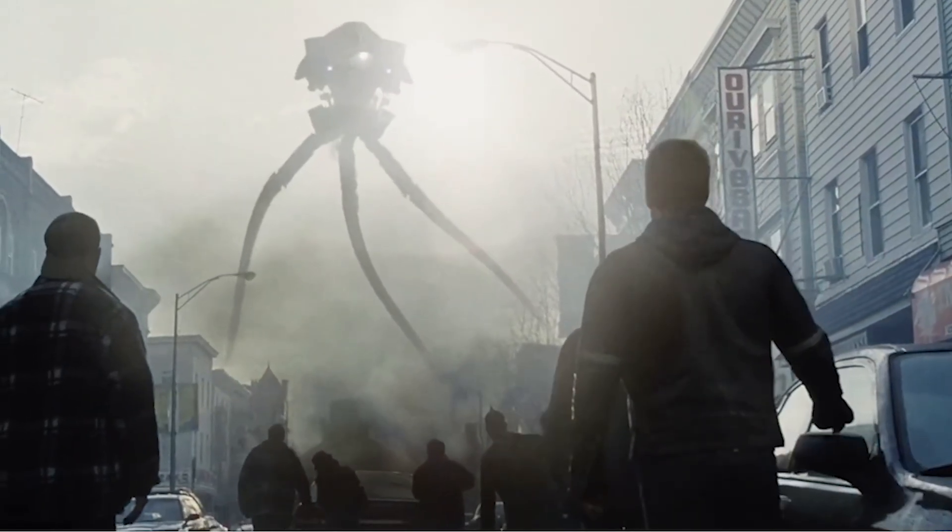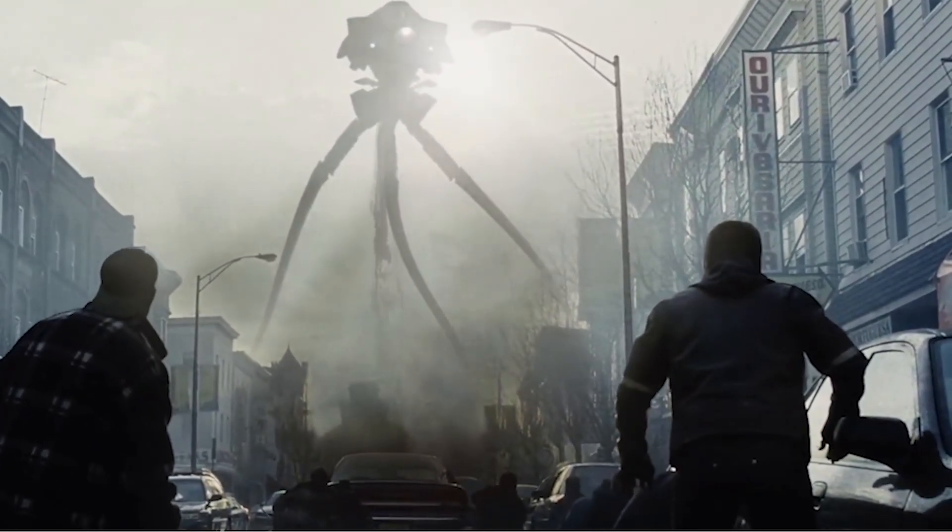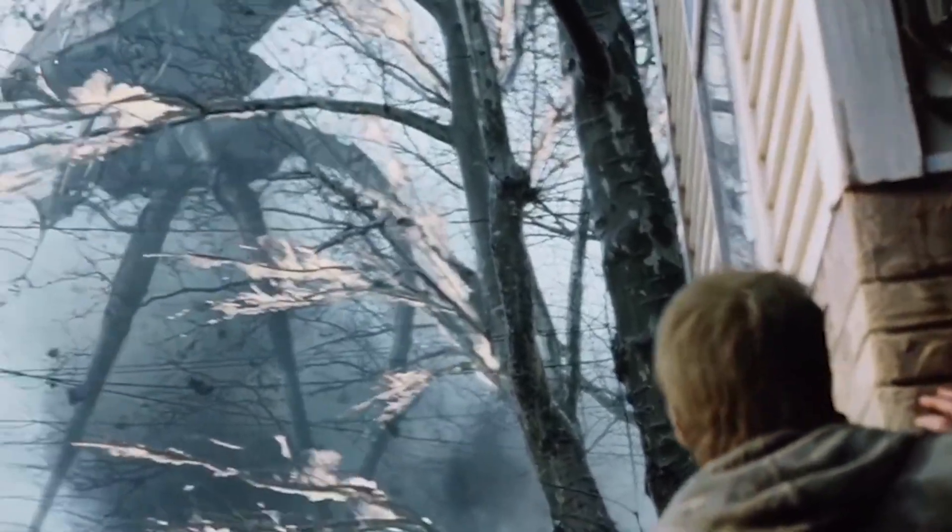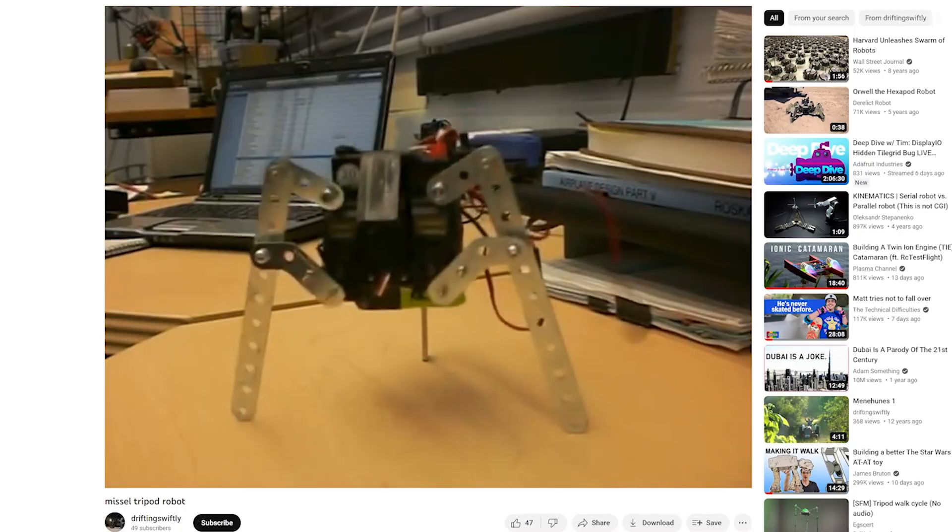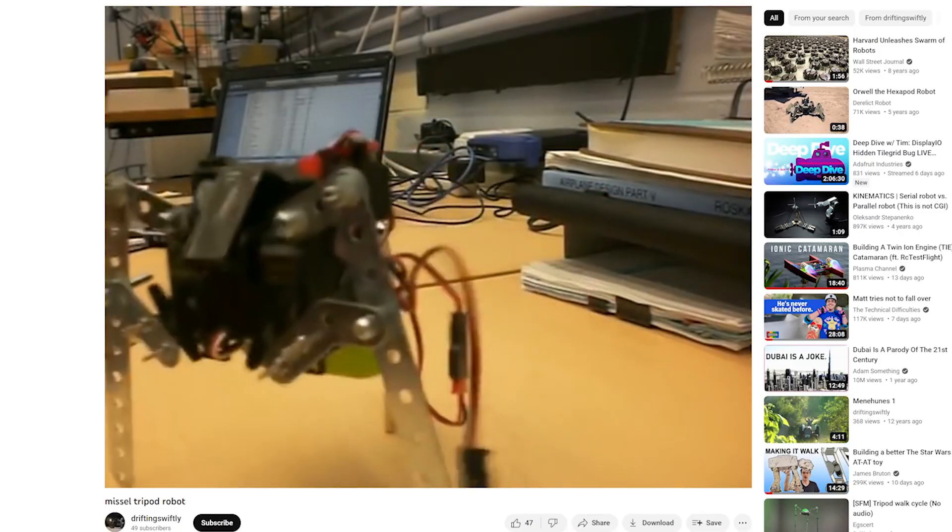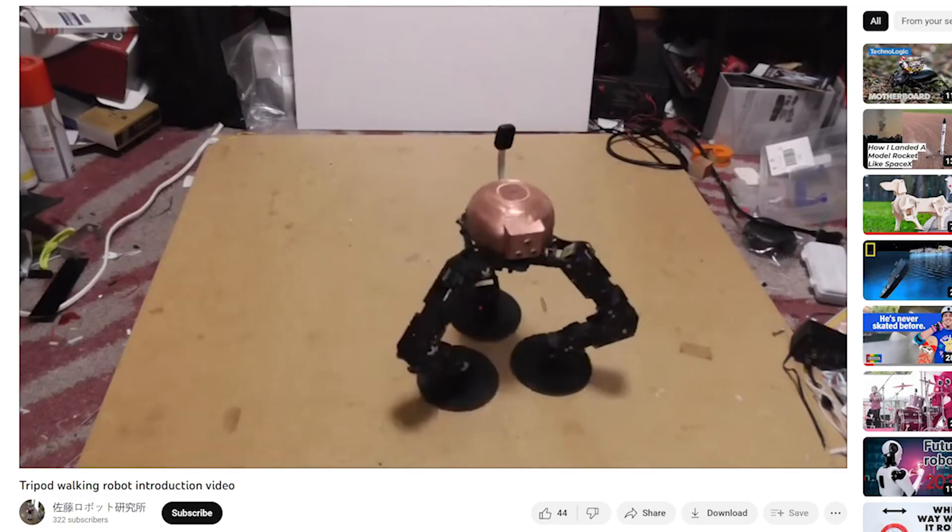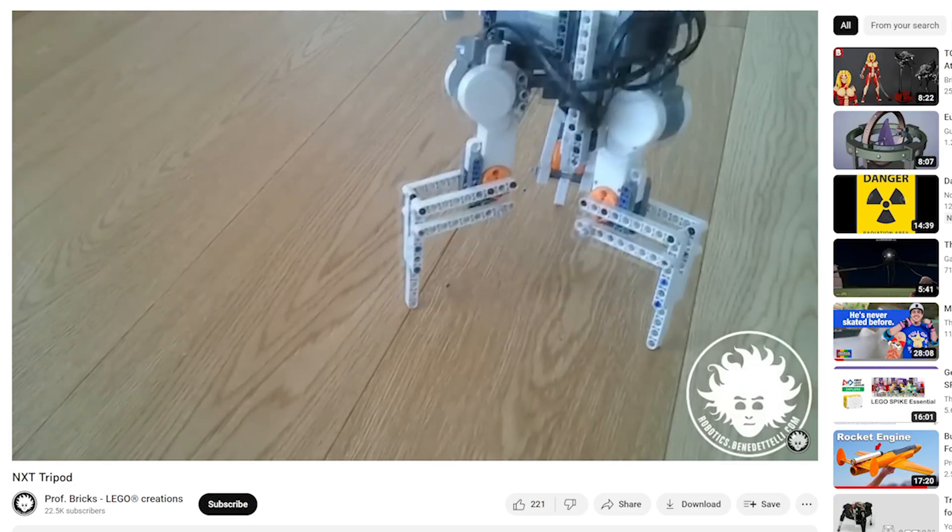But can tripods really walk? They only have three legs, which means they have to stand on two legs while taking a step with the other leg. In the 2005 movie, they appear to have legs which look a bit like tentacles, but we don't see how the ends touch the ground that much. I found various other tripod robot projects on YouTube, but none of them really take proper steps, even the ones with big flat feet. So could we really make a tripod robot that could take actual steps and walk along?